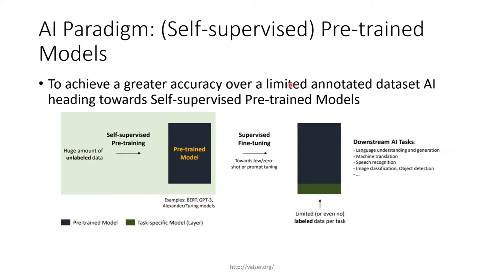The figure here outlines the steps involved. We have a huge amount of unlabeled data. We perform self-supervised pre-training and pre-train our model. Then we append a task-specific model which has limited or even no labeled data per task.